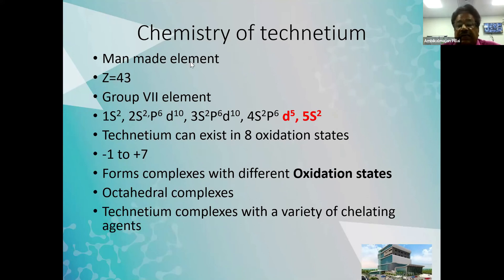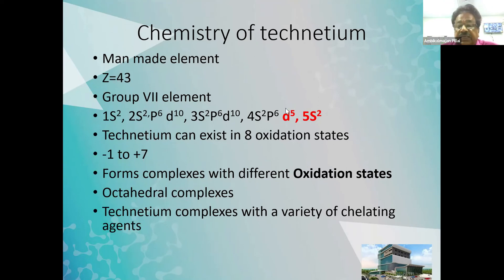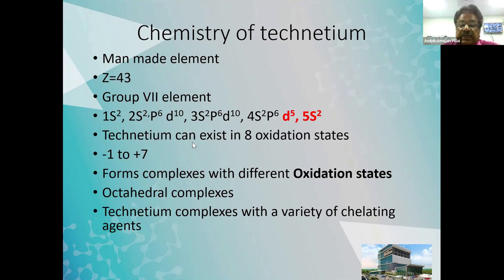Technetium is a man-made element. Until 1937, when it was discovered by Segre and Seaborg, it was not known to mankind. It has an atomic number of 43. It is a group seven element. Looking at its electronic configuration, in the fourth orbit there are five electrons and in the fifth orbit there are two electrons. These seven electrons can be very easily removed, so pertechnetate always exists in the plus-seven state. Then technetium can exist in eight oxidation states, from minus one to plus seven.